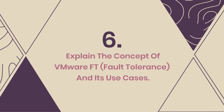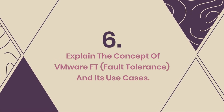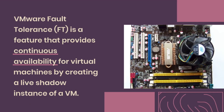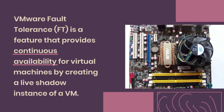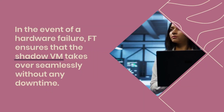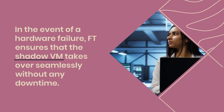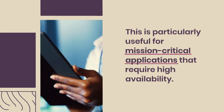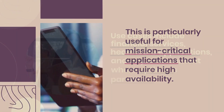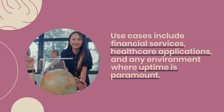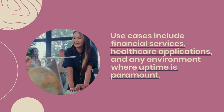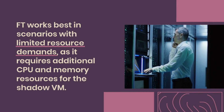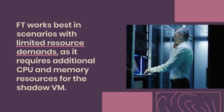Question 6: Explain the concept of VMware FT (Fault Tolerance) and its use cases. VMware Fault Tolerance is a feature that provides continuous availability for virtual machines by creating a live shadow instance of a VM in the event of a hardware failure. FT ensures that the shadow VM takes over seamlessly without any downtime. This is particularly useful for mission-critical applications that require high availability. Use cases include financial services, healthcare applications, and any environment where uptime is paramount. FT works best in scenarios with limited resource demands, as it requires additional CPU and memory resources for the shadow VM.